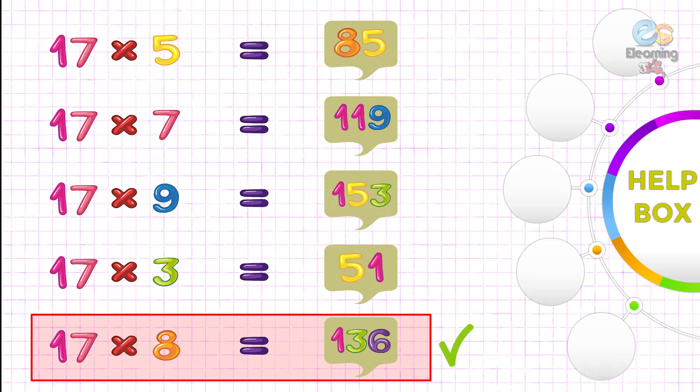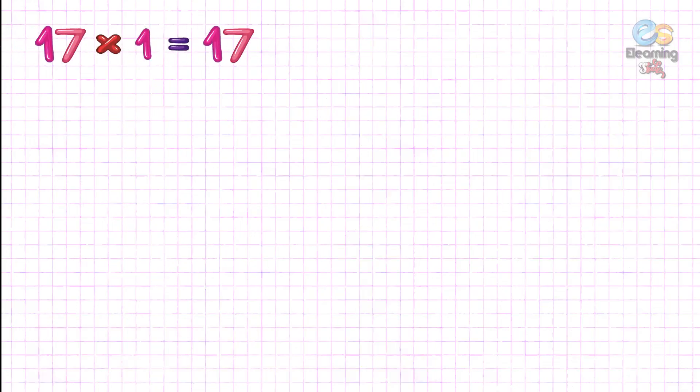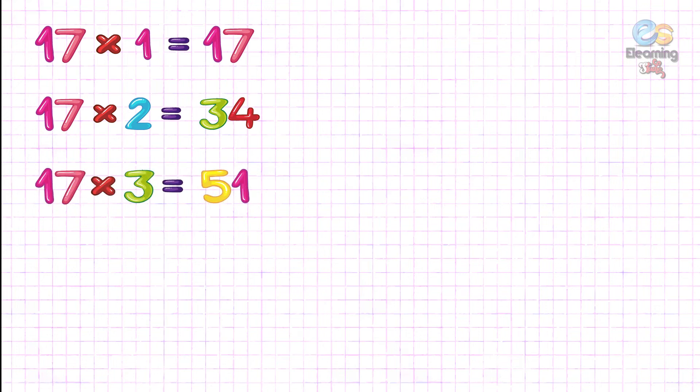Right answer. 17 ones are? 17. 17 twos are? 34. 17 threes are? 51. 17 fours are? 68.